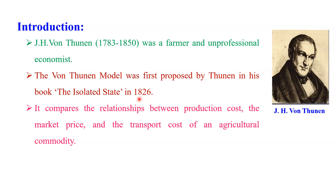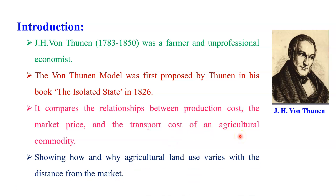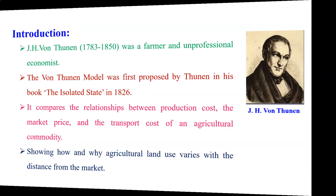Dear students, this model compared the relationship between production cost, the market price, and the transport cost of an agriculture commodity, showing how and why agricultural land use varies with the distance from the market. While studying this model, we need to consider certain assumptions made by Van Thünen.